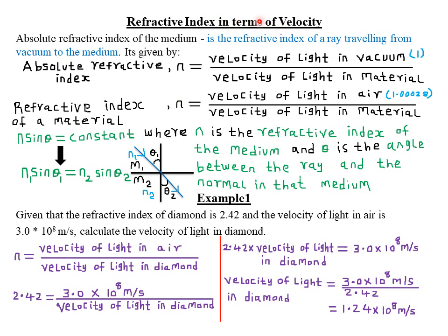So today we are looking at refractive index in terms of velocity. Let's start by defining what we mean by absolute refractive index of a medium. This refers to the refractive index of a ray traveling from vacuum to the medium. When we talk of a medium, we are talking of a material such as glass or water. But when we talk of a vacuum, we are talking of a place without any material medium — a place without air such that there is no material medium for that particular ray to travel.